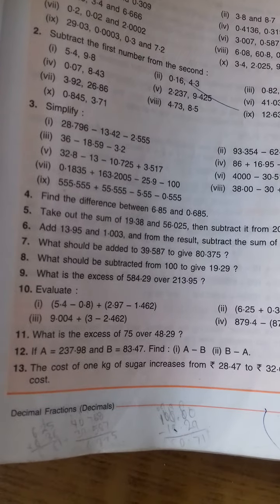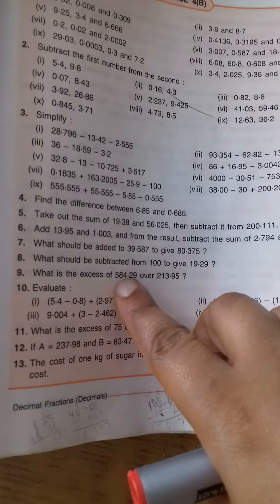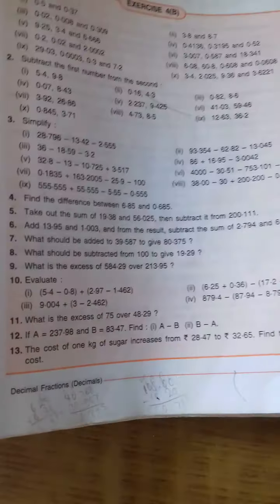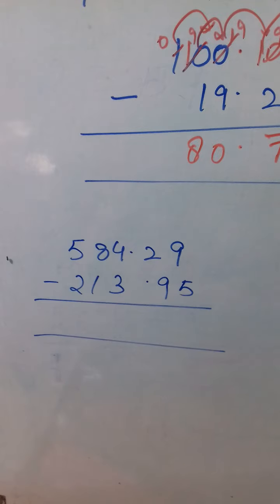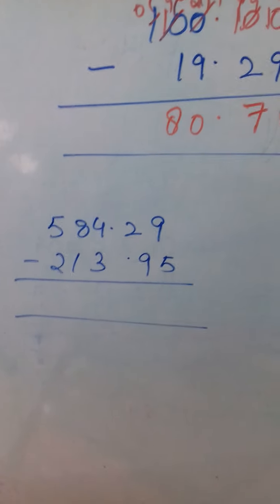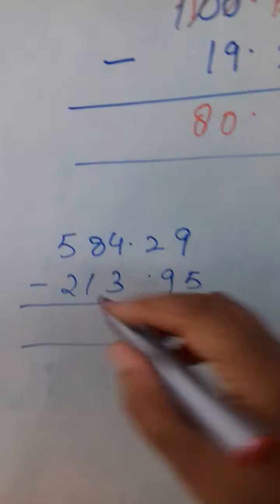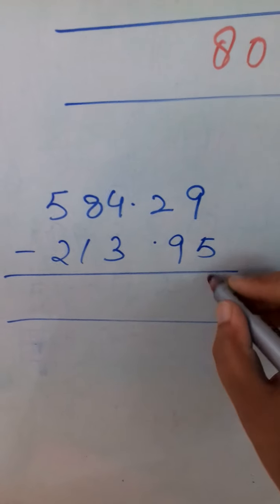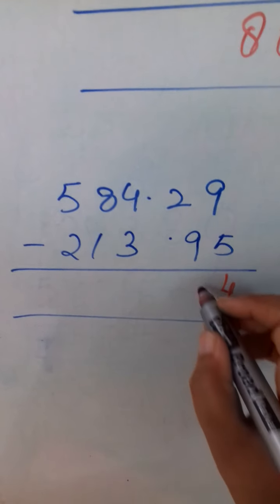Now next question, question number 9. What is the excess of 584.29 over this? Means how much this is more than this. So again here, when you read excess, you understand that you have to subtract. So 584.29 minus 213.95. Now 9 minus 5 is 4. Again 12 minus 9 is 3.